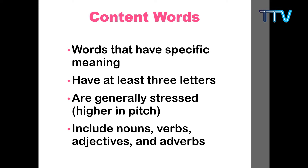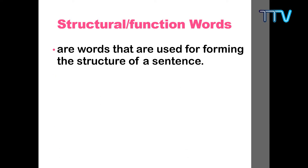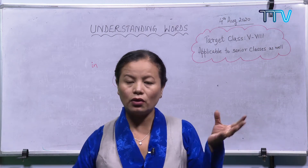In order to make a sentence, we need to use both content words as well as structural or function words. Structural or function words have little meaning of their own, unlike content words. Content words have a specific meaning — if I say 'table', you can immediately think of a table, or 'pen', you know this is a pen. But if I just say 'is' on its own, it doesn't have a specific meaning. 'Pen' as a content word has meaning; 'is' as a function word does not.